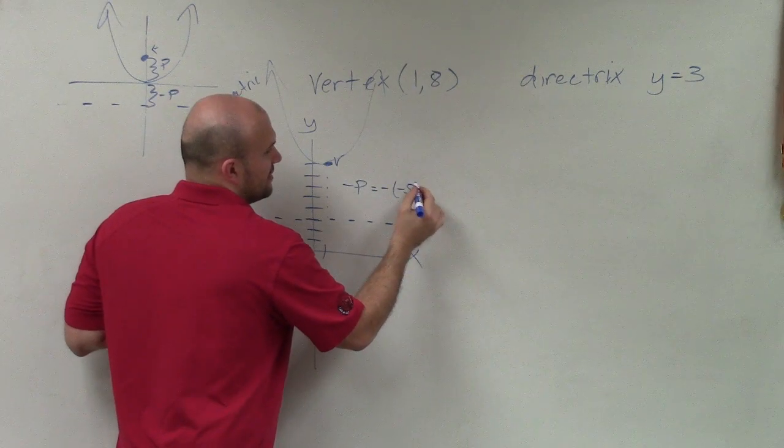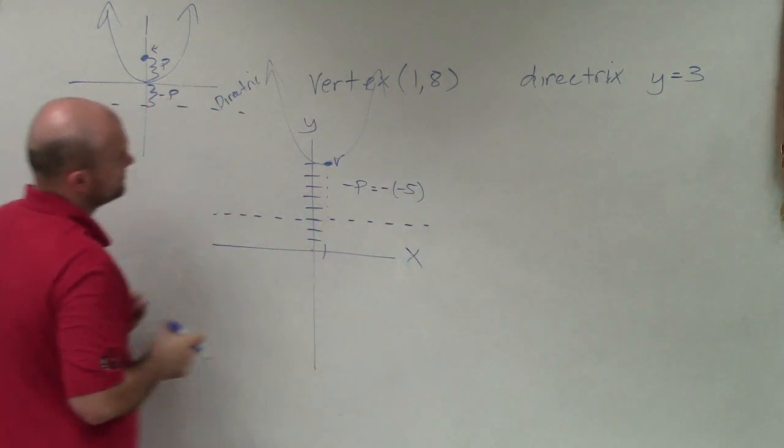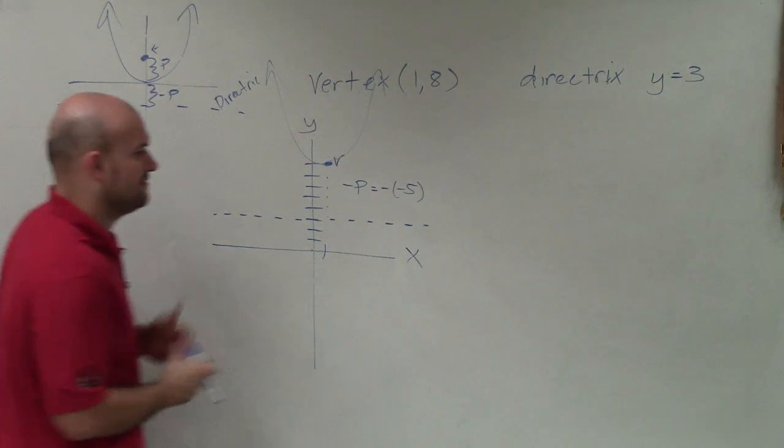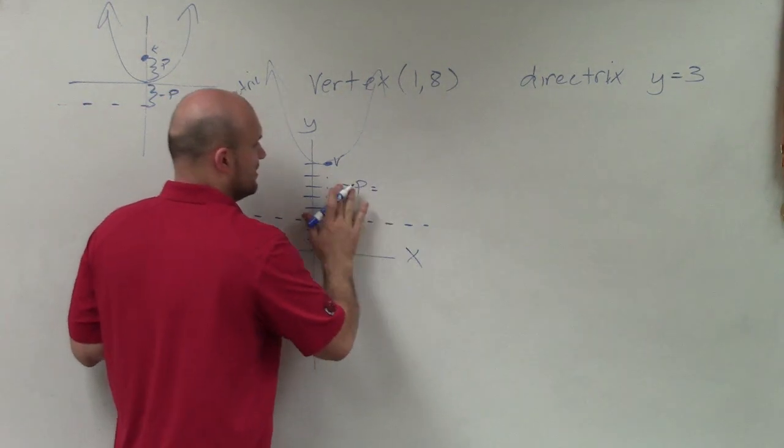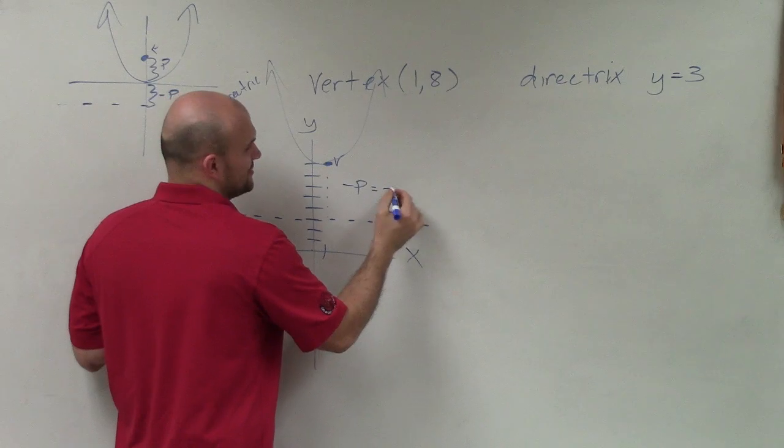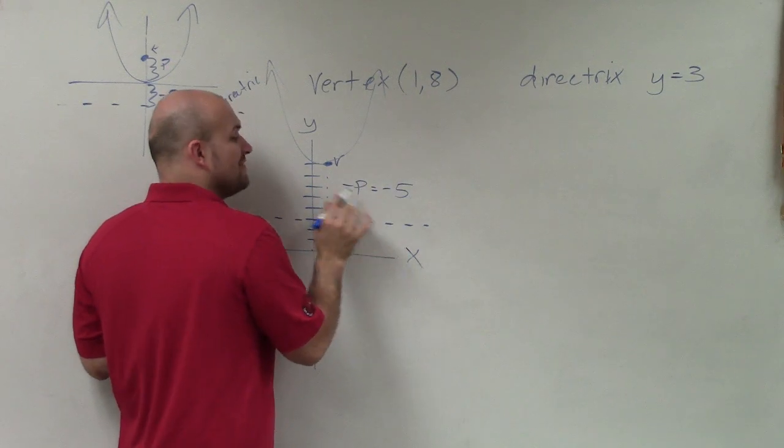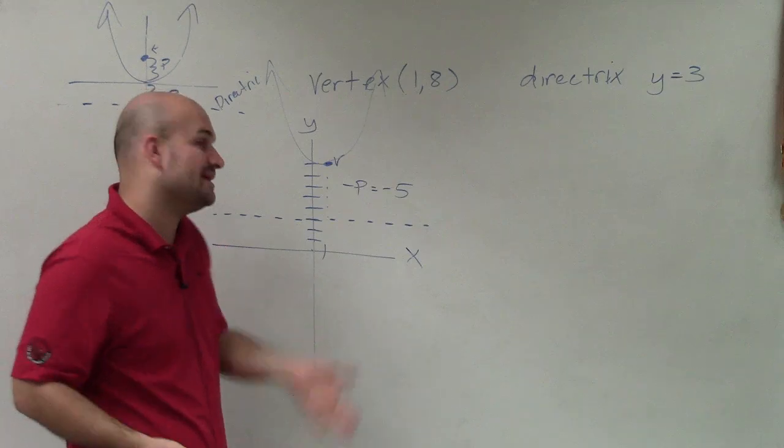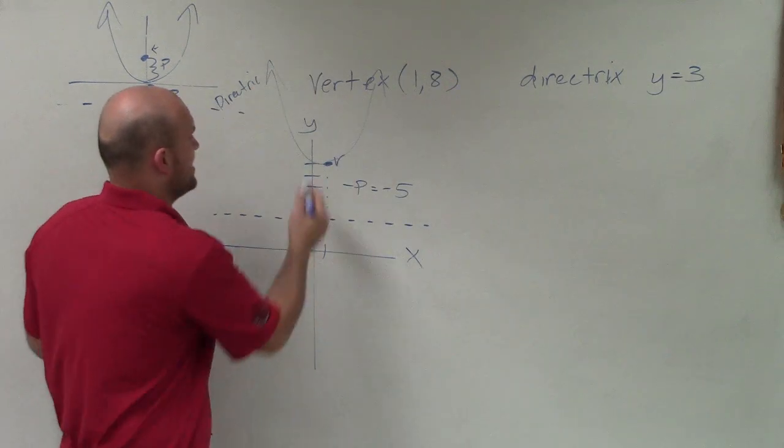So that equals negative... negative... I don't know what I'm doing. That's negative p, which is equal to, or p is equal to negative 5. So if I want to figure out what exactly is p, p is going to be positive 5.